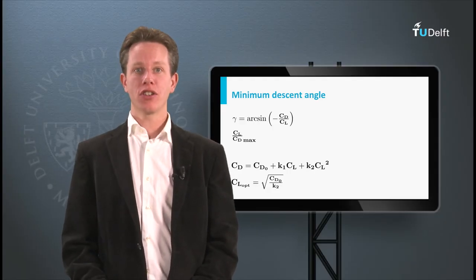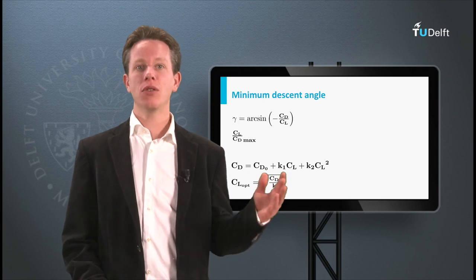So if the lift drag polar is known, the minimum glide angle can actually be calculated. But do you notice something strange about the equation for the angle?